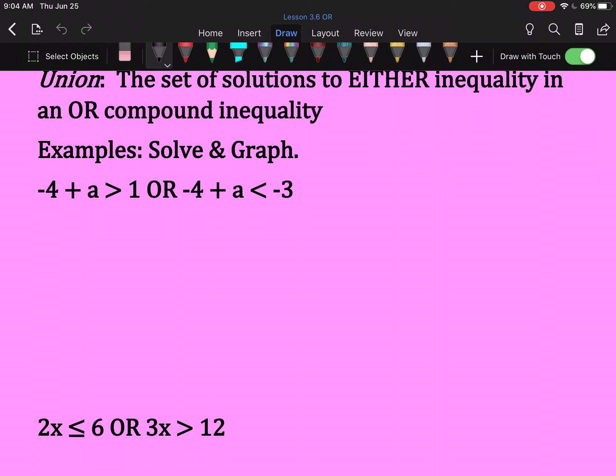First up, solving. Now that's easy business. This has a negative 4, so I'm going to add it to both sides. So that'll say a is greater than 5. This also has the negative 4. No, the expressions won't always be the same. That'll give me a is less than 1.